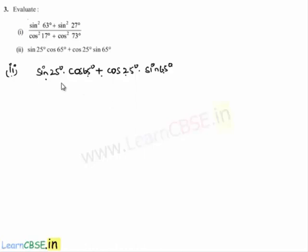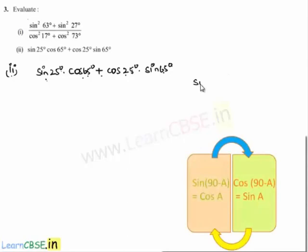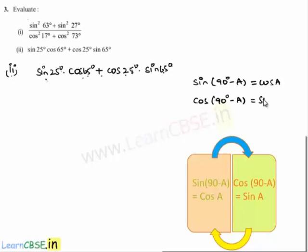If we observe clearly, we can convert one of the terms in terms of sin and the other in terms of cos so that this may form an identity. This can be done by using the formulas: sin(90° - a) = cos a and cos(90° - a) = sin a.